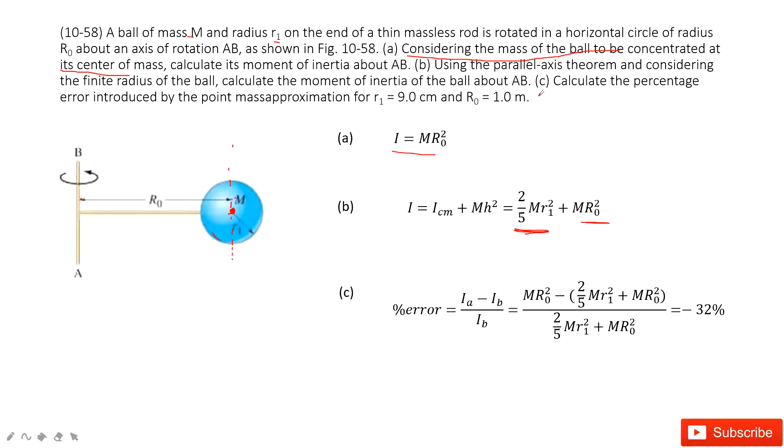Next, we need to find the percentage error. The percentage error is the approximate moment of inertia from part A minus the exact moment of inertia from part B, divided by